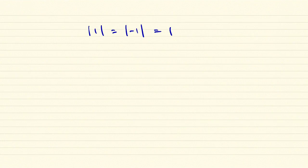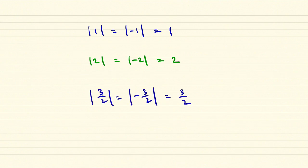For example, one and minus one are both one unit distant from zero, so their absolute value is one. Two and minus two are both distant two from zero, so their absolute value is two. One and a half and minus one and a half are both three on two units from zero, so their absolute value is three on two. And, of course, as we've observed, the absolute value of zero, the same as minus zero, is zero.